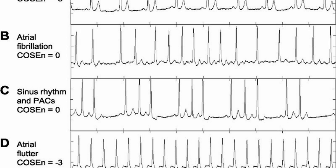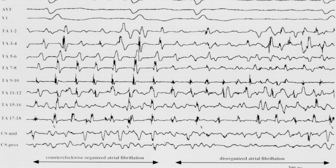If the SA node does not function, the AV node takes over. The AV node is located close to the tricuspid valve and discharges at a rate of 40–60 beats per minute.